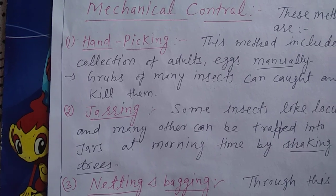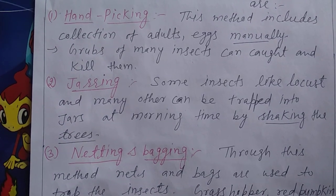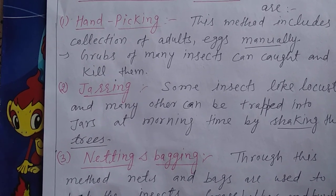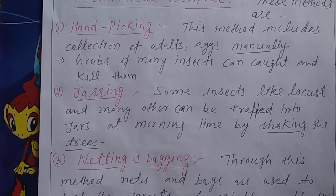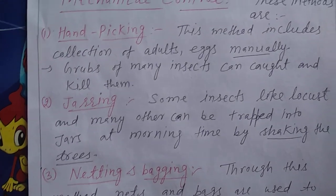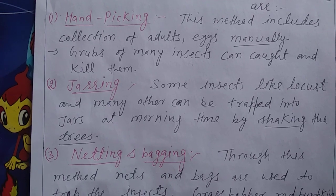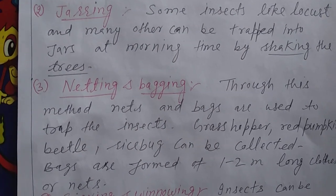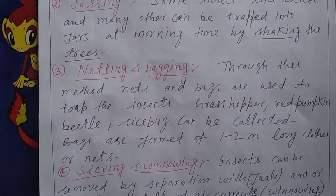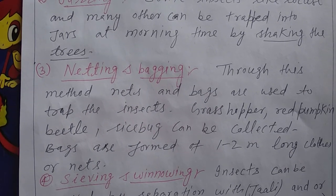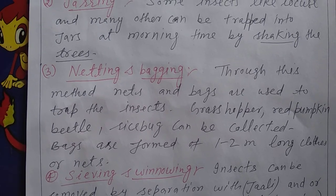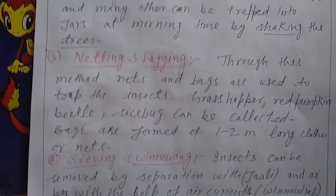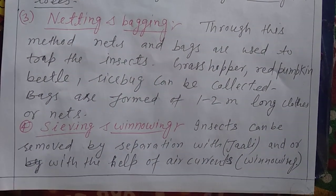Bagging is used for fruits and citrus plants to maintain protection from insects. Unripened fruits are covered using bagging techniques to keep insects away and prevent infestation in the crop area.